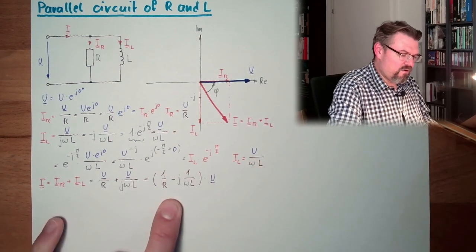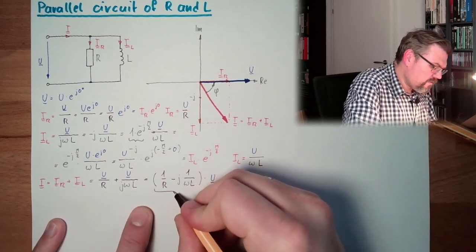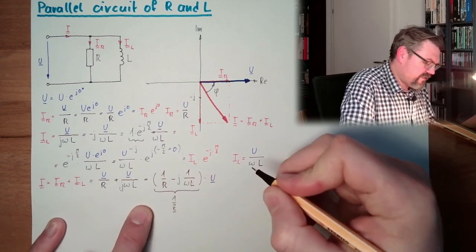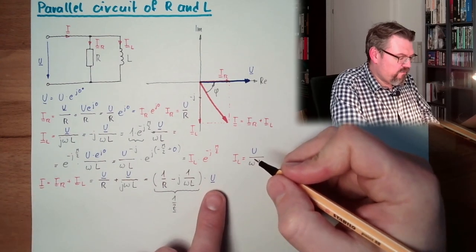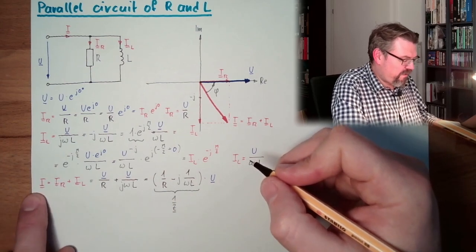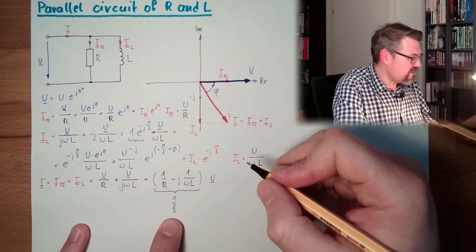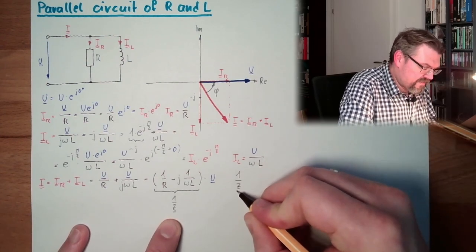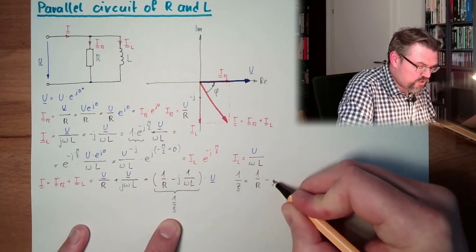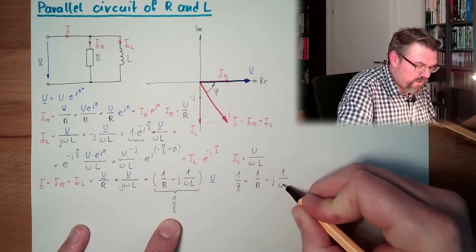And this is now, this is now 1 divided by our impedance Z. Because then we would have U equals Z multiplied by I, so this must be 1 divided by Z. So 1 divided by our impedance Z equals 1 divided by R minus j 1 divided by omega L.